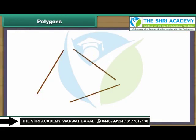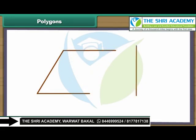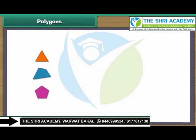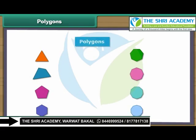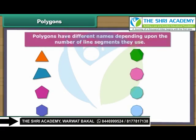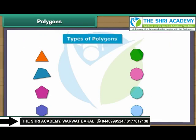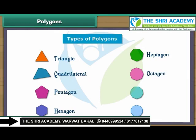We can form different shapes by enclosing them with line segments on all sides. Such closed figures are known as polygons. Polygons have different names depending upon the number of line segments they use. The types of polygons are: triangle, quadrilateral, pentagon, hexagon, heptagon, octagon, nonagon, and decagon.